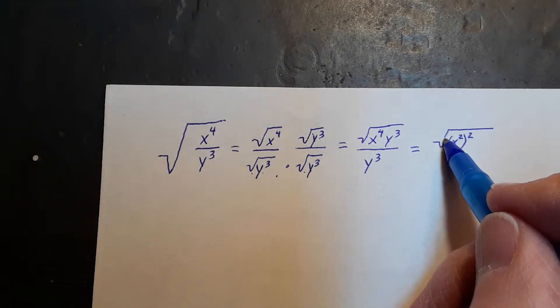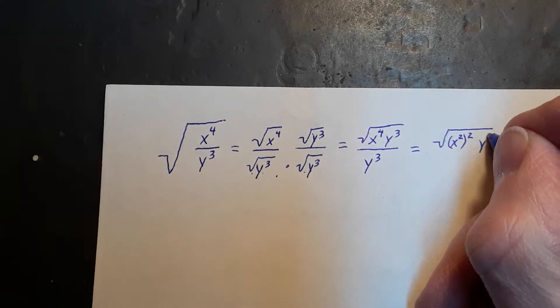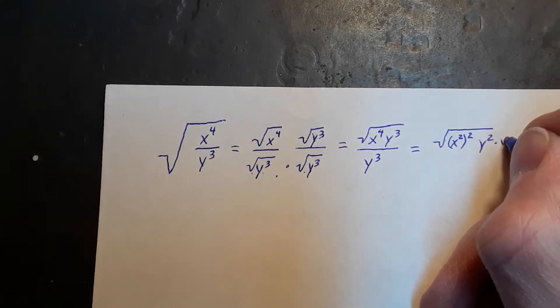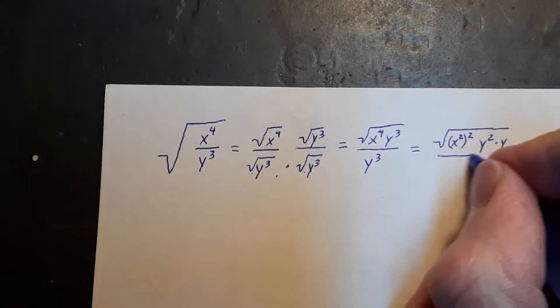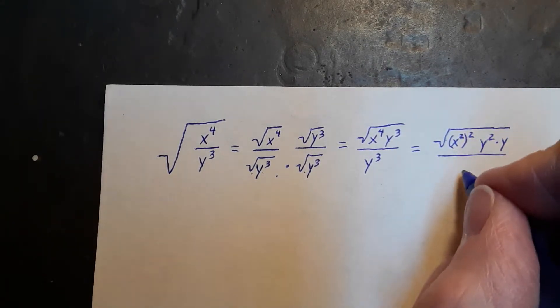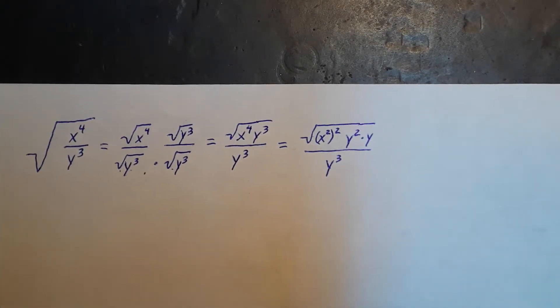And I'm going to rewrite the y as y squared times y. If we multiply these together, we will get y cubed back. And so that is a valid factorization. Our denominator is the same at this point.